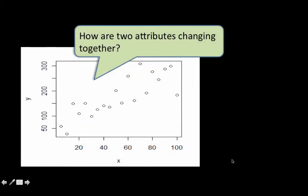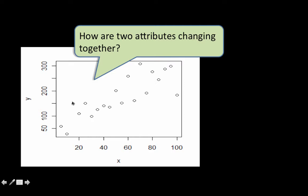So here we've got two attributes, and for convenience I've just named them x and y. It could have been height and weight, or sales and the industry a company is in — we're just looking at x and y as two attributes of some data set. You could plot the points because every point in your data set has a value for x and a value for y. Let's say x and y are height and weight — these are heights and weights of lots of different people. Every person has a height and a weight, so every person is represented by a point.